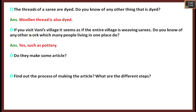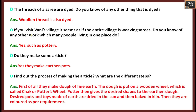For pottery, they make earthen pots and articles. Find out the process of making the article and the different steps. First, they make a dough of fine earth. The dough is put on a wooden wheel called a chalk or potter's wheel. The potter then gives the desired shape to the earth. The desired pots and toys made of earth are dried in the sun and then baked in a kiln, and then colored as per requirement.